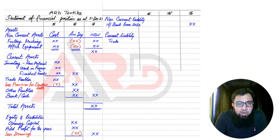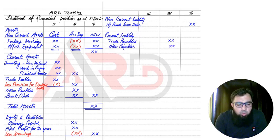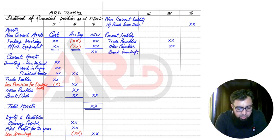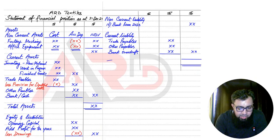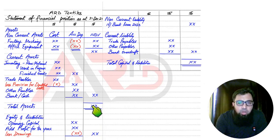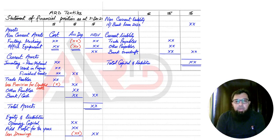Then we have current liabilities: trade payables, which are creditors, and other payables, which can include accrued expenses, prepaid income, or a bank overdraft. If we add up all current liabilities, then combine capital and liabilities, this total should equal the total assets side. If the assets figure matches capital plus liabilities, this means our answer is correct.